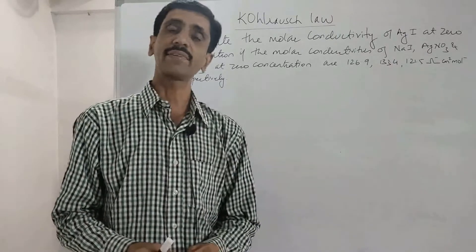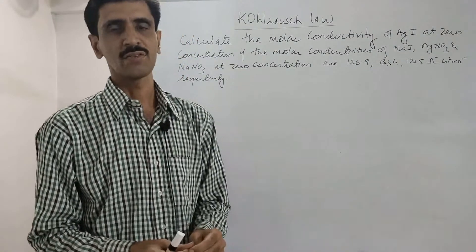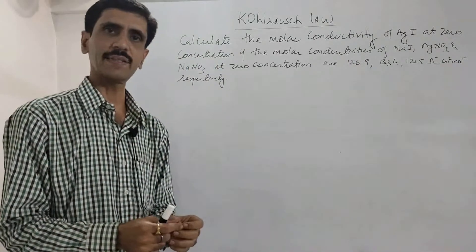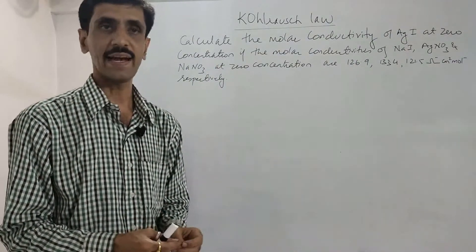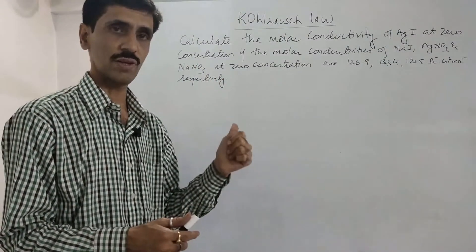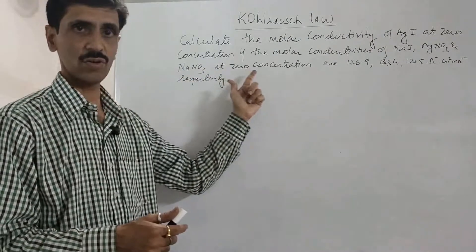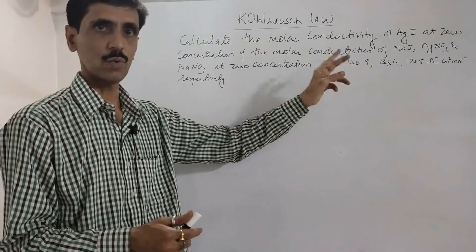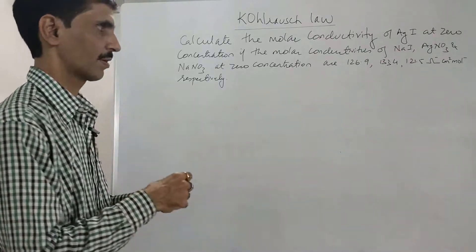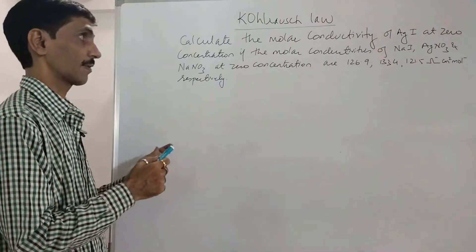Hello my dear friends, let us consider some numerical problems based on Kohlrausch law. The first one is: we have to calculate the molar conductivity of silver iodide (AgI) at zero concentration. The molar conductivities of sodium iodide, silver nitrate, and sodium nitrate at zero concentration are 126.9, 133.4, and 121.5 ohm⁻¹ cm² mol⁻¹ respectively.